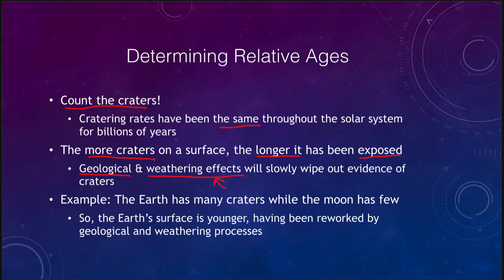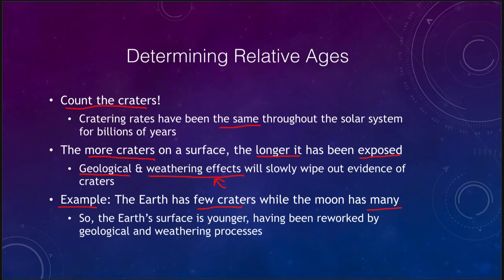Geological activity, weathering effects, and the presence of an atmosphere can really affect the number of craters we see on an object. Earth has very few craters while the moon has many — that tells us that Earth's surface has been reworked by geological and weathering processes. Over billions of years, Earth's craters have been wiped out leaving only the most recent ones, while many of the craters that ever formed on the moon are still there.